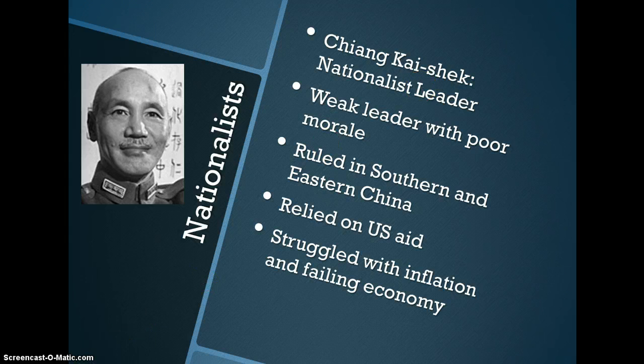All right, we're finished with A, so on to B. In order to prevent a communist revolution in Asia, the U.S. sent the nationalist government $2 billion in aid beginning in the mid-1940s. But they squandered it and were not very organized. So by 1949, the communists had captured the capital, Beijing, and support for the nationalists had declined.